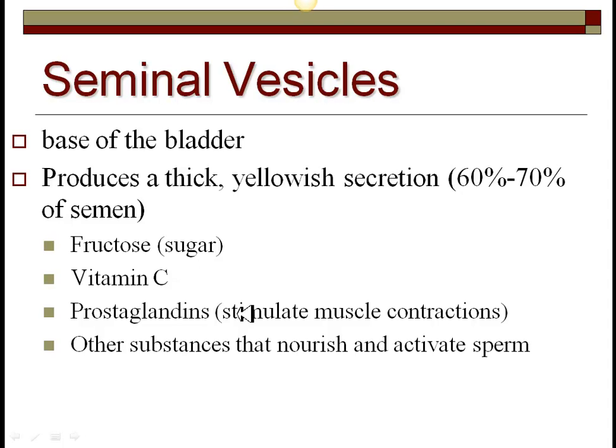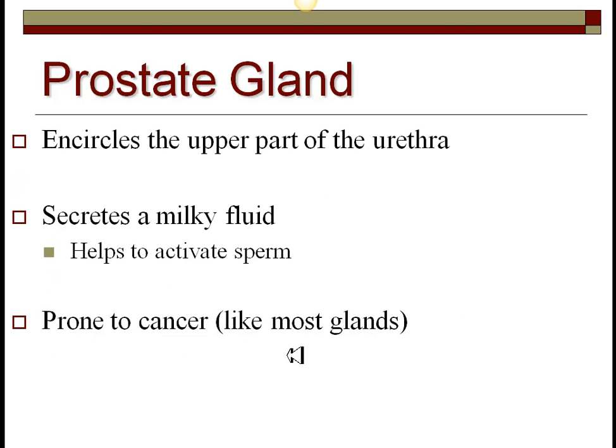The seminal vesicle also contributes vitamin C, prostaglandins — which stimulate muscle contractions in the female — and lots of other substances that activate the sperm. Recently they figured out that there are hormones and substances that can actually influence the female. The act of sexual intercourse can cause the female to ovulate a little early. For example, around normal ovulation on day 14, having unprotected sex on day 13 raises chances significantly because semen can actually cause ovulation.